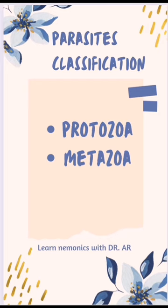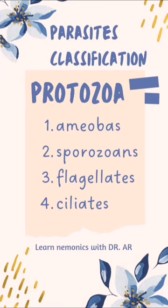The metozoa are also known as helminths. The protozoa are further divided into amoebas, also known as sarcodina, and the sporozoa, the flagellates, which are also known as mastigophora, and the ciliates.